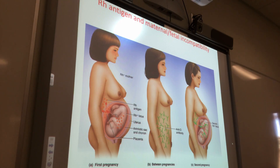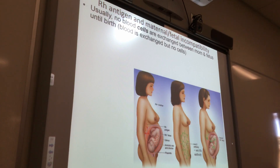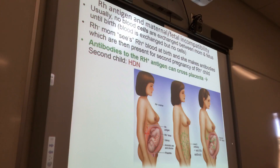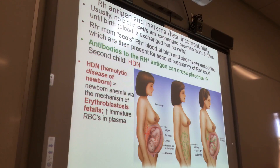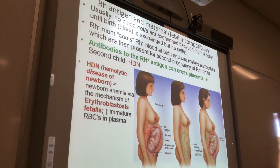So now let's look at what happens — here's the name of the disease. When this second Rh positive fetus is born, they're born with HDN, or hemolytic disease of the newborn.